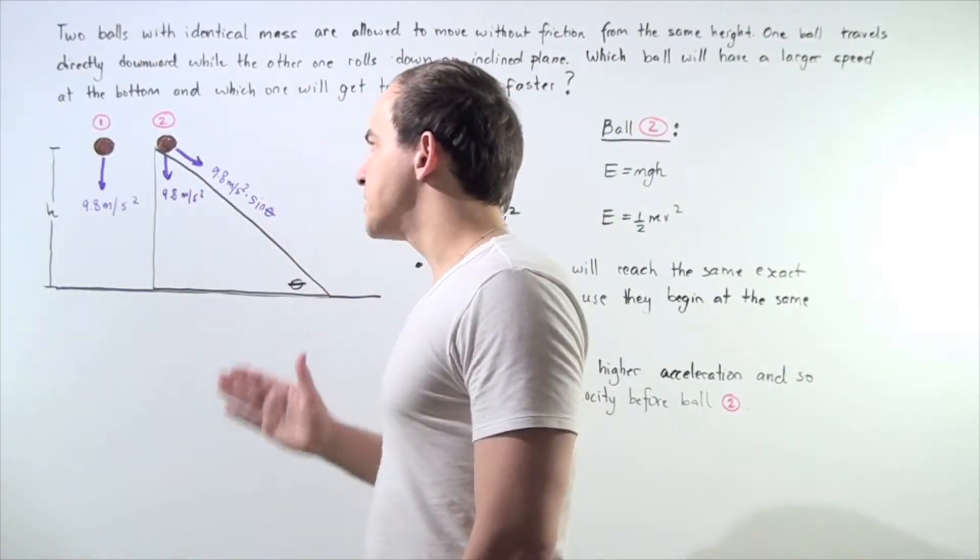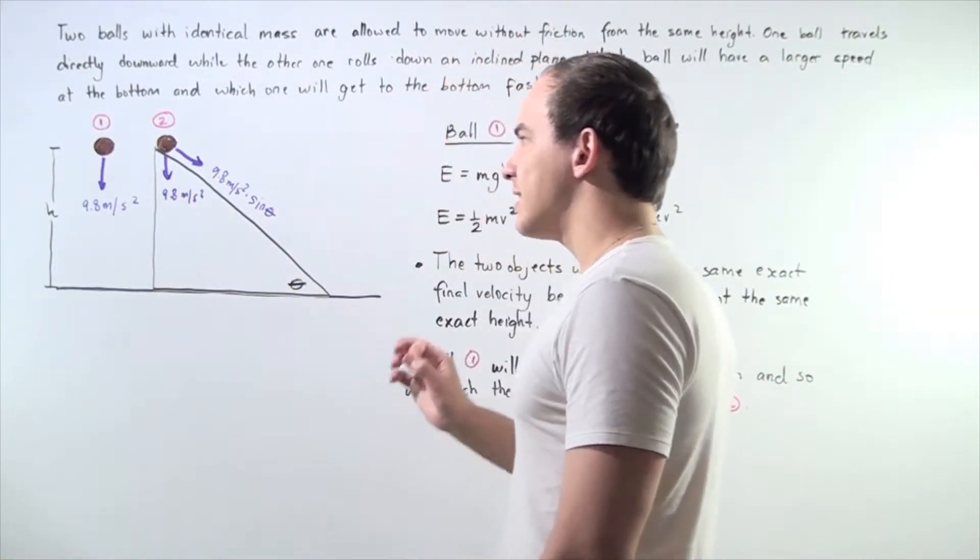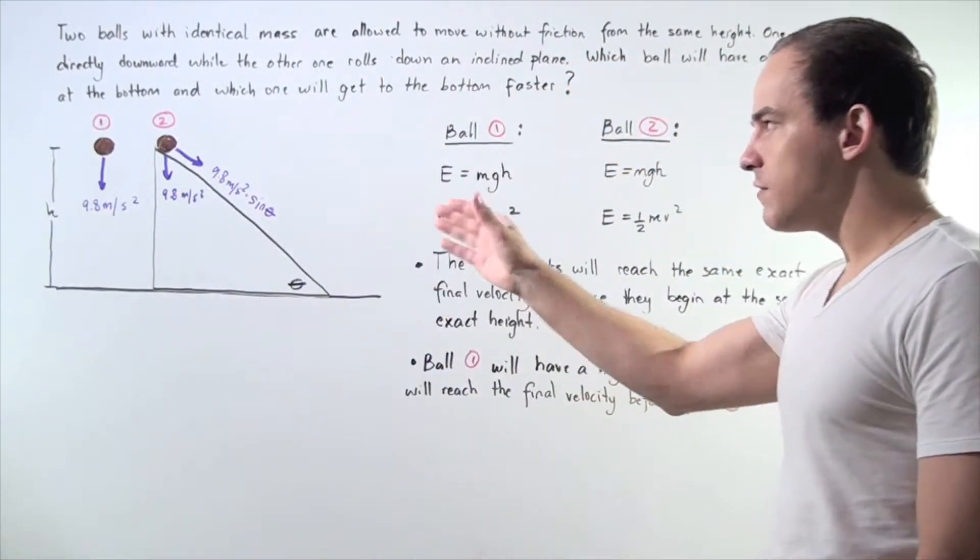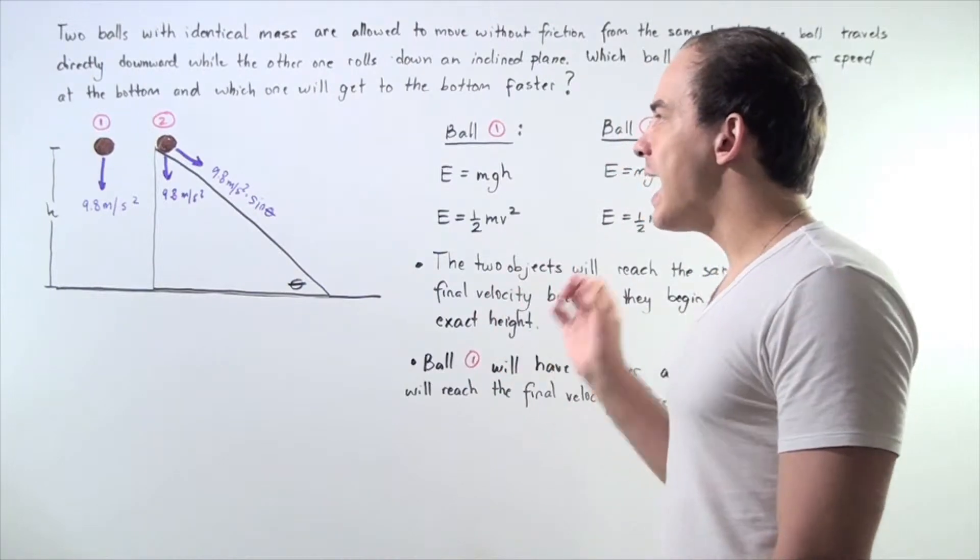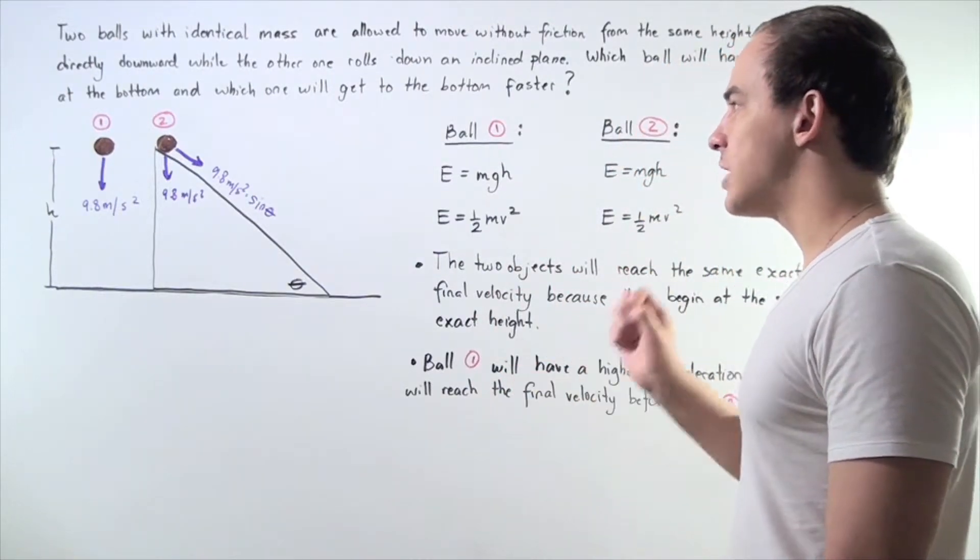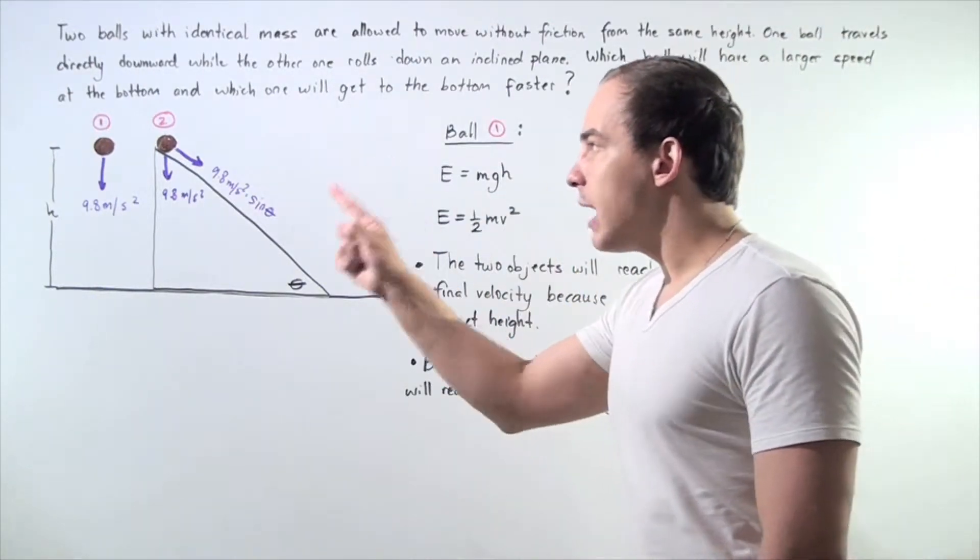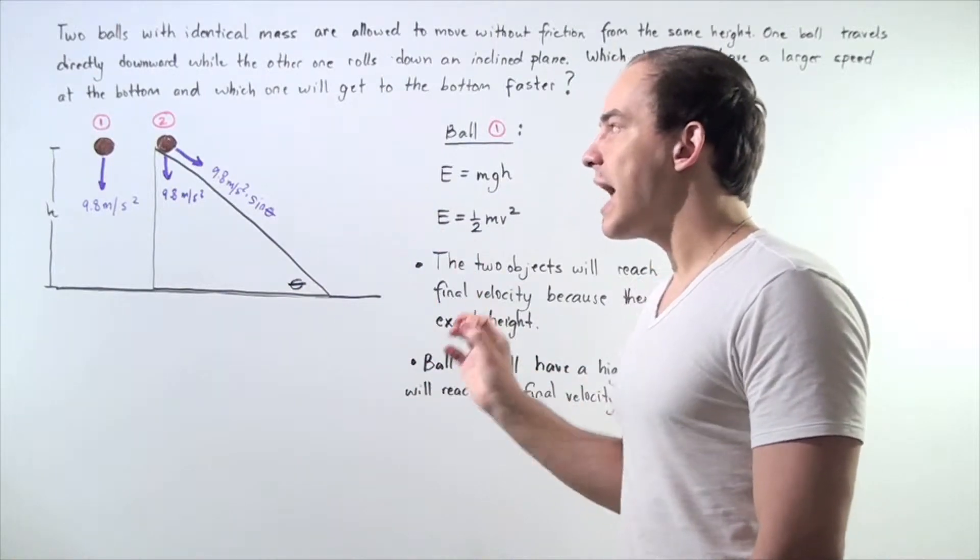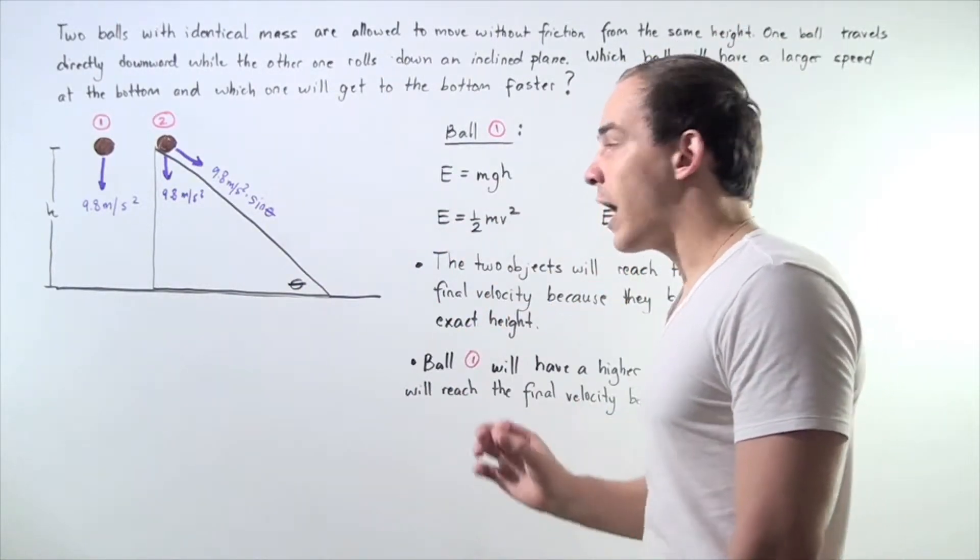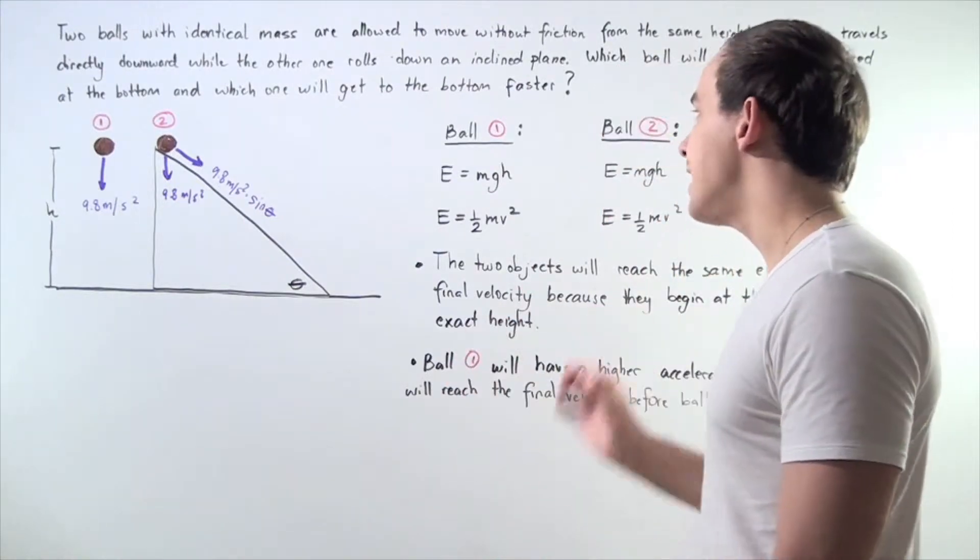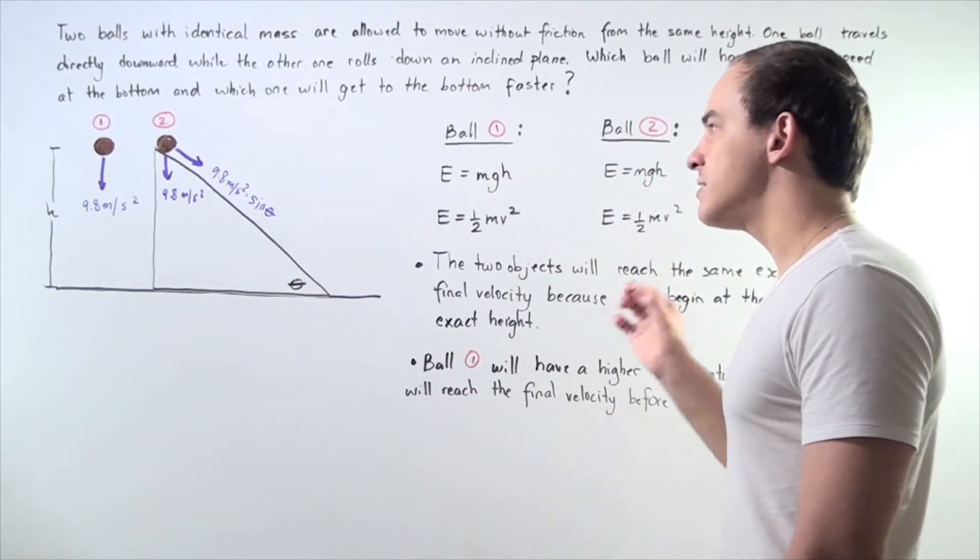Well, both of our objects begin with initial velocity of zero. So neither of the objects at the beginning have kinetic energy. They only have gravitational potential energy. And because both objects are found at the same exact height H above the ground, that means our initial total mechanical energy will be exactly the same.